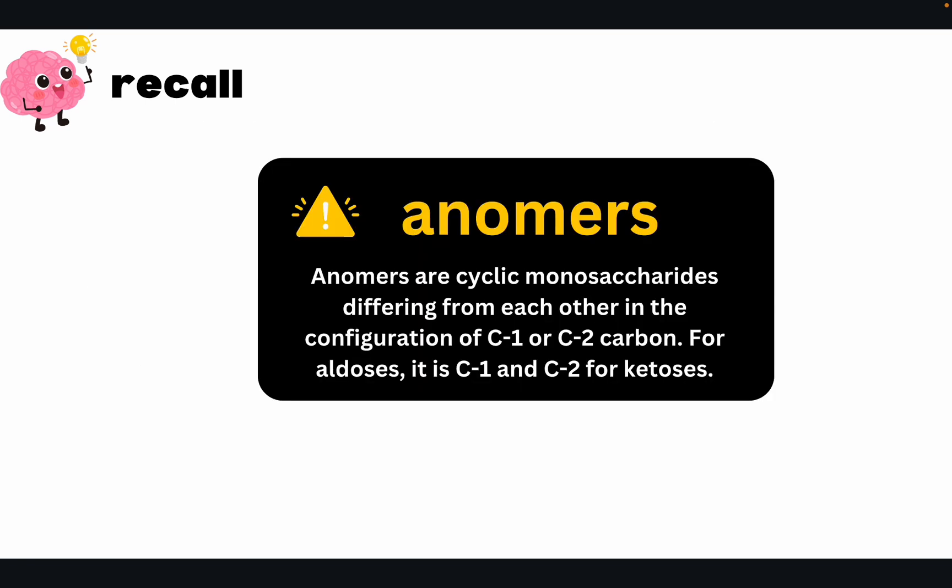We also talked about anomers. Anomers are cyclic monosaccharides differing from each other in the configuration of C1 or C2. For aldoses, it is usually carbon 1, and for ketoses, it is usually carbon 2.